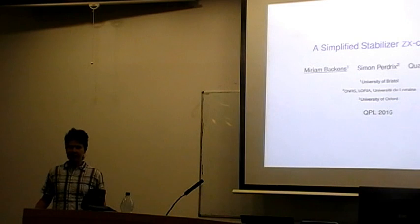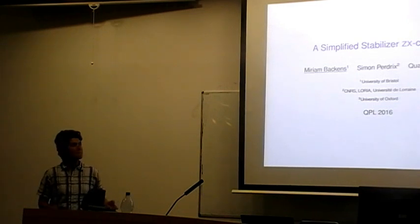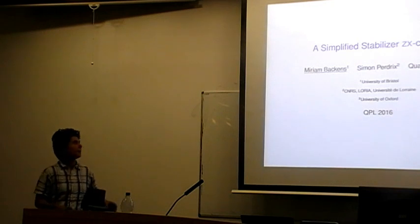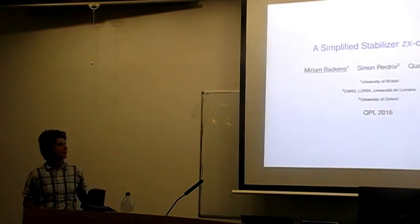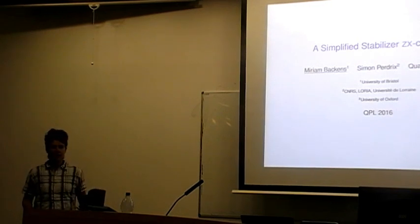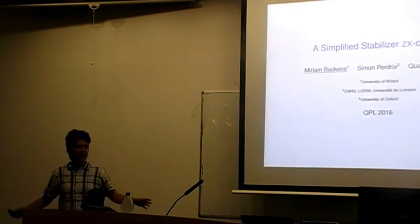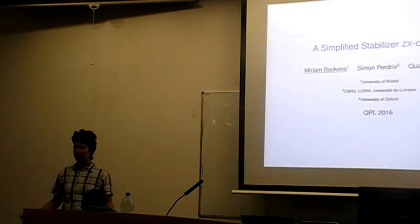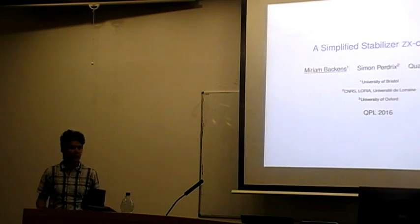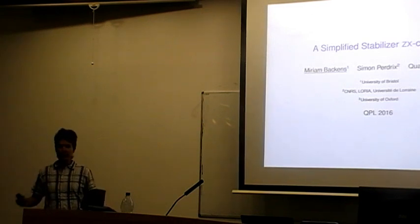One of the specific completeness results was the one for the stabilizer ZX calculus — which, in case you're not familiar with stabilizer quantum mechanics, I'm going to define in a little bit. For the stabilizer ZX calculus, we have completeness, which means our rewrite rules allow us to derive any equality that we could derive using matrices. So any problem within stabilizer quantum mechanics, we can study in the ZX calculus.